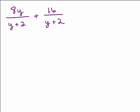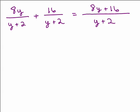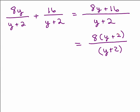Here's one for you to try — put it on pause and try it, then come back. We have a common denominator of y plus 2, so write it down once and add the numerators. Resist the temptation to cancel the 2 and 16, or 2 and 8, or the y's — you can only cancel when factored. From 8y plus 16, factor out 8 to get 8 times (y plus 2). The y plus 2 cancels, and 8 over 1 is just 8, so the answer is 8.